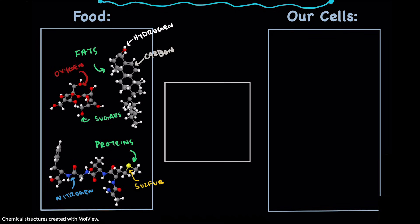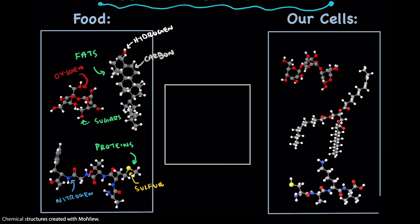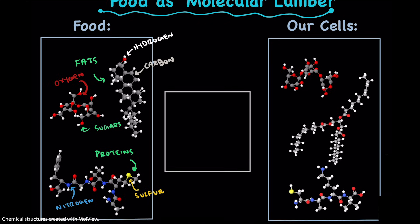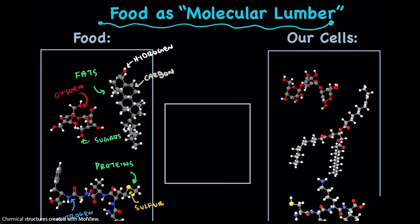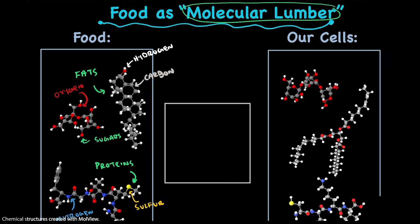But the super interesting part here is that these are actually the same exact elements that make up most of the cells in your body. So you may notice on this right-hand side, the same colors as what we have on the left. So this is where the whole molecular lumber thing comes in.